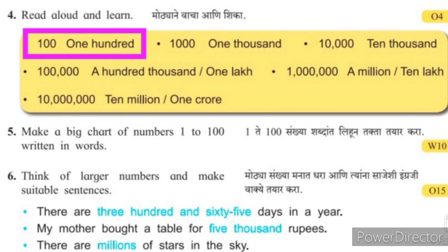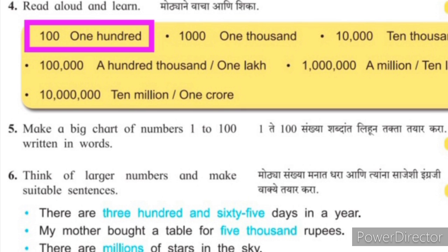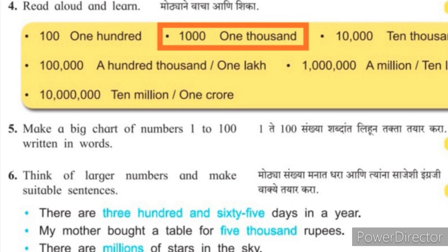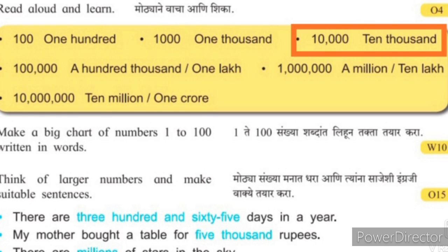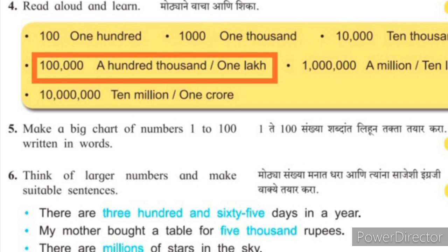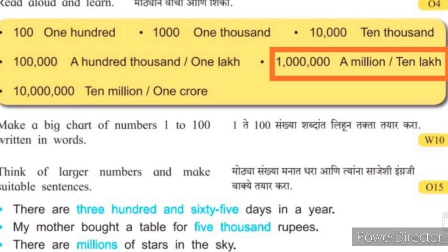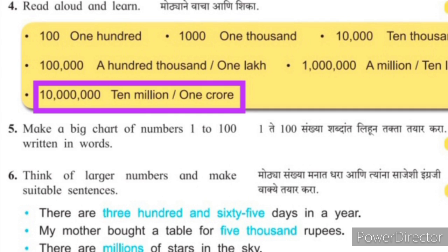We will read them one by one. The first number is 100 — we read it as one hundred. Second example: 1,000 — ek hazaar. Next number: 10,000 — ten thousand. And we can read 1,000,000 as one million. The last number given here is 1 crore.